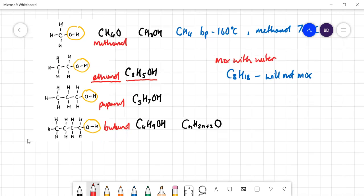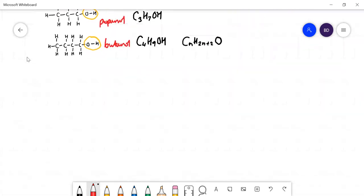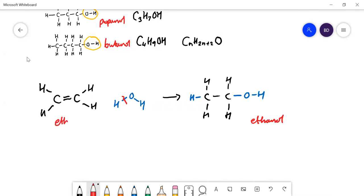The two ways of making ethanol - we've come across one already in the alkenes topic. Basically you get an alkene from cracking, ethene, and you react that with water or steam. The double bond breaks, and the carbons need to form four bonds, so the hydrogen from water goes on there, the water molecule breaks, and the OH goes on there. That is ethanol, which can be made from ethene that comes from cracking crude oil.